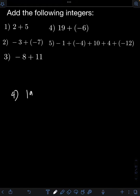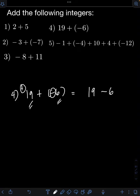For number 4, we have 19 plus negative 6. So this time we are adding unlike signs again — one positive and one negative. Doing the same as number 3, we subtract the smaller absolute value, which is 6, from the bigger absolute value, which is 19, disregarding the signs. So 19 minus 6, that will be 13. And we follow the sign of the bigger absolute value in the final answer, that is positive 19. So therefore, the final answer should be positive 13, or simply 13.